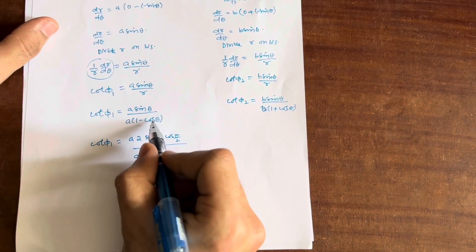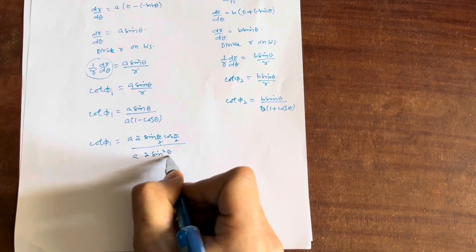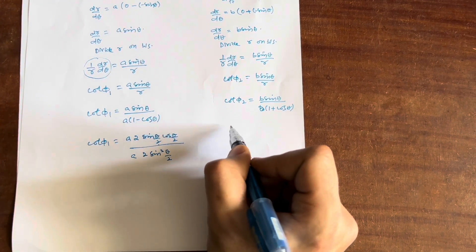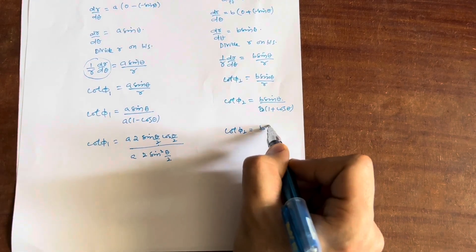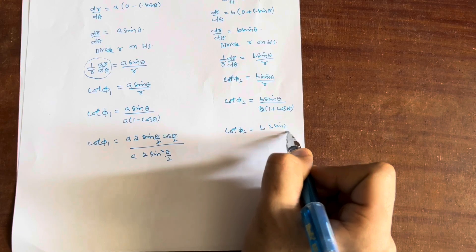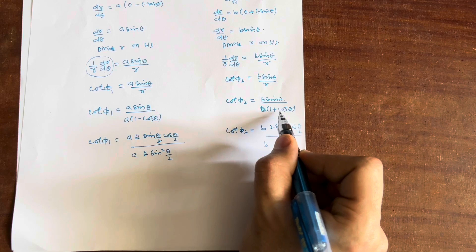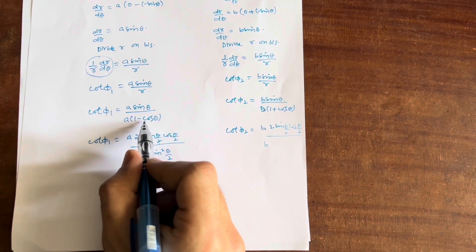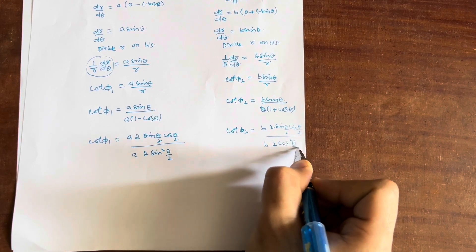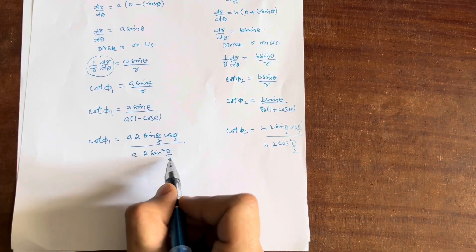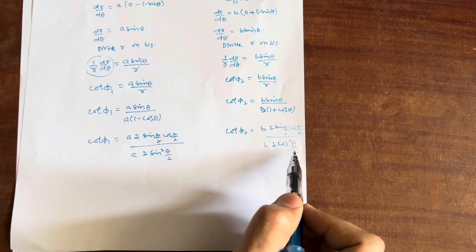Now use the half-angle formulas: 1 − cos θ equals 2 sin²(θ/2), and 1 + cos θ equals 2 cos²(θ/2). So cot φ₁ equals A · 2 sin(θ/2) cos(θ/2) divided by A · 2 sin²(θ/2). Similarly, cot φ₂ equals B · 2 sin(θ/2) cos(θ/2) divided by B · 2 cos²(θ/2). The constants A, B and the factors of 2 cancel in both expressions.